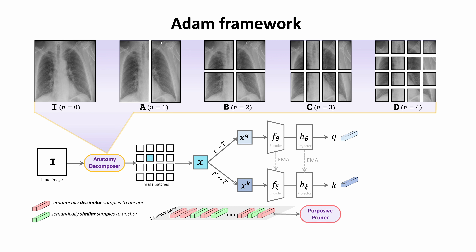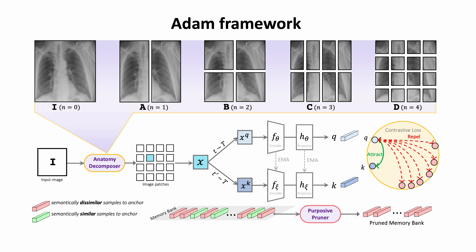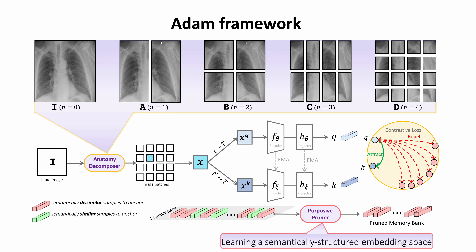We then pass the memory bank of negative samples and latent features of x to our Purposive Pruner component, which computes cosine similarities between features of x and those in the memory bank, and removes samples with similarity greater than a threshold. This results in a pruned memory bank used for computing the contrastive loss. The Purposive Pruner enables the model to learn a semantically structured embedding space that preserves anatomical locality by removing semantic collisions from the learning objective.